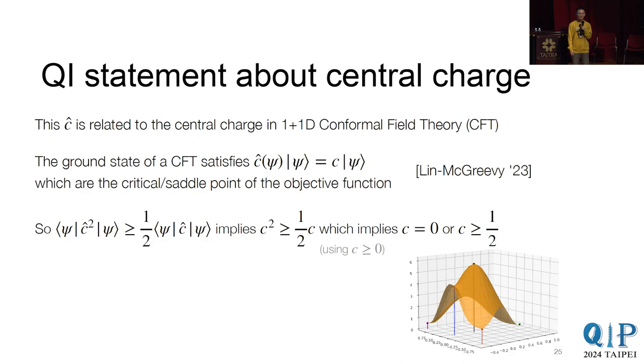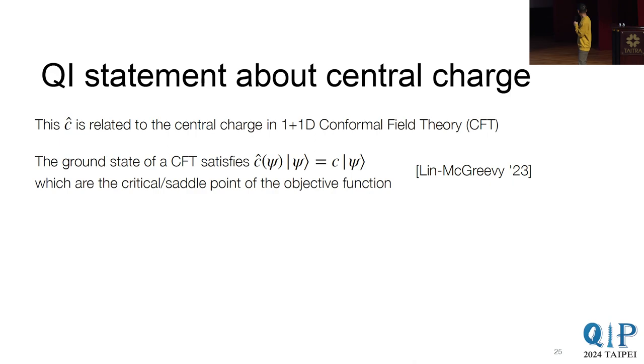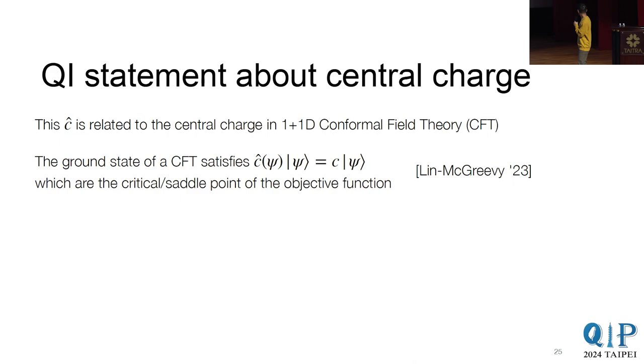Is there a last question? I'm wondering whether it is indeed stronger than strong subadditivity. I thought this can be implied by strong subadditivity. Oh, which one? This one. If you apply strong subadditivity several times, if you consider trace of an arbitrary state with this operator, and then you add and subtract some sort of terms, and then you're going to combine them into some relative entropy differences. I don't know if such a proof would work, but we can chat afterwards. Okay. So let's thank the speaker again. Thank you.